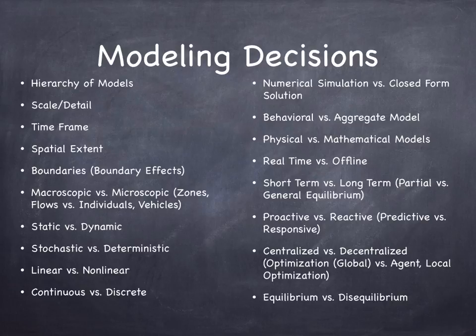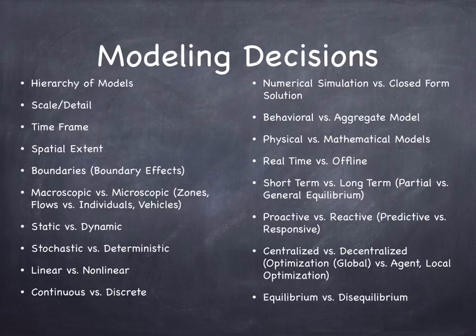Is it a physical model or a mathematical model? Is it solved in real time or offline? Does it consider all of the feedback effects or just some of them? Is it short-term versus long-term? Is it predictive or responsive? Does it try to change how we're going to behave — is it proactive or reactive? Is it centralized or decentralized? Are the agents acting for the good of the whole or the good of themselves individually? Is the model in equilibrium?